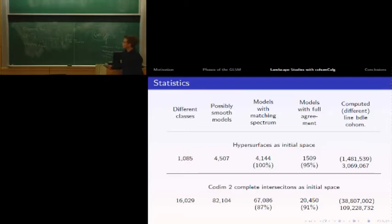Here we got 91% of agreement for about 109,224 models. Of course, we needed a lot of line bundle cohomologies to do that - about 38 million.